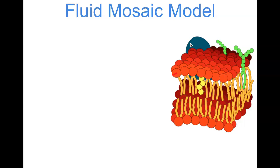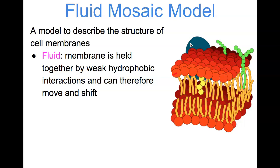The same thing holds true for the plasma membrane and calling it the fluid mosaic model. It is a model to describe the structure of cell membranes or biological membranes, and it's a fluid in that a membrane is held together by weak hydrophobic interactions and can therefore move or shift. When we think of these phospholipids and the membranes of cell organelles, the phospholipids aren't static. They don't stay in a fixed position.